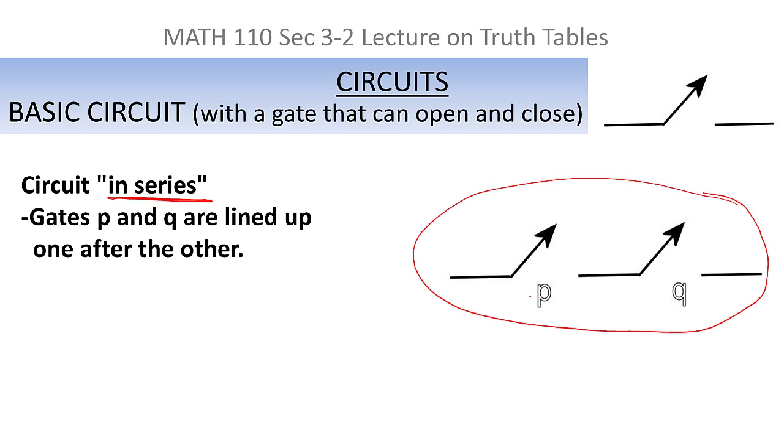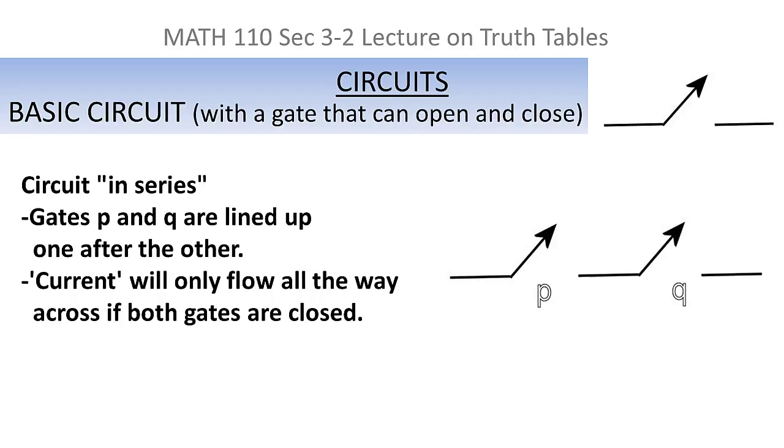So if you have gates, we'll give them names for convenience, say P and Q. So let's say we have gates P and Q and they're lined up in a row or in series. If you go back to our wire with electricity flowing through analogy, current will only flow all the way from the starting point to the ending point if both gates are closed. The only way current will get from here to here is for both gates to be closed.